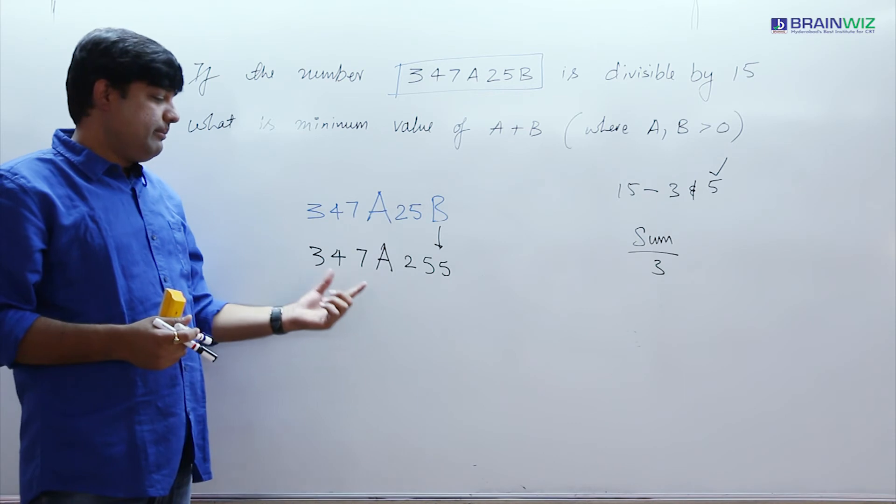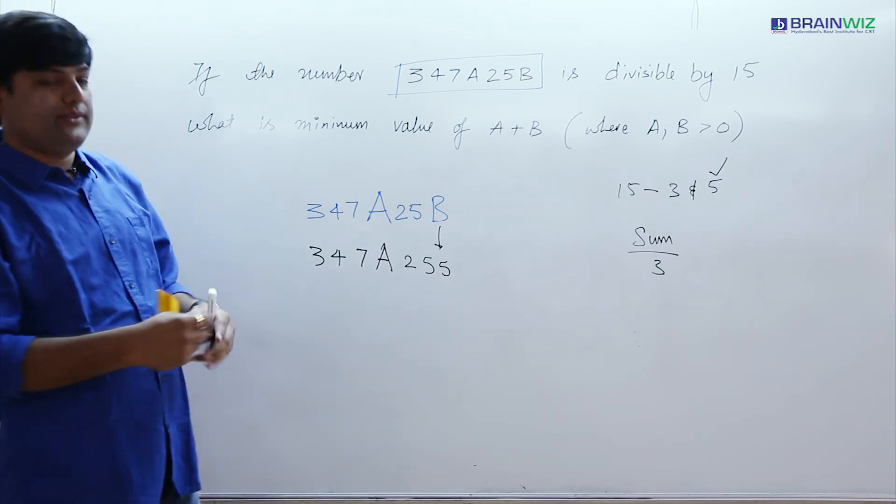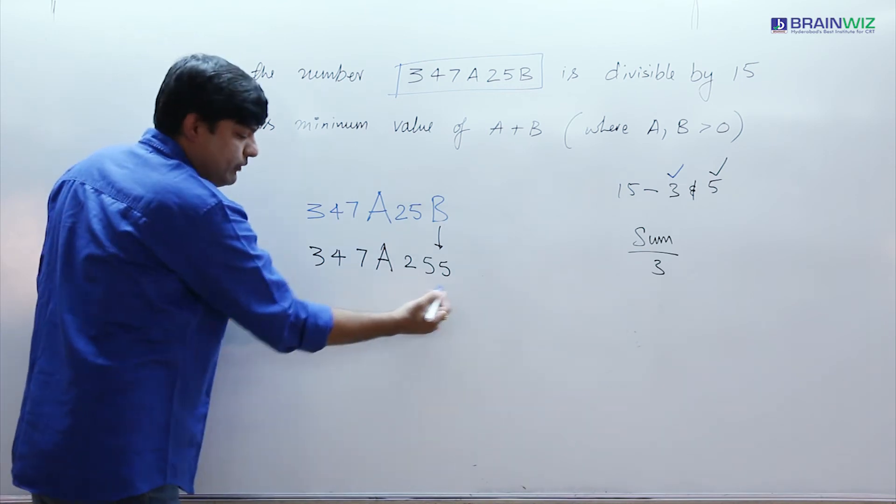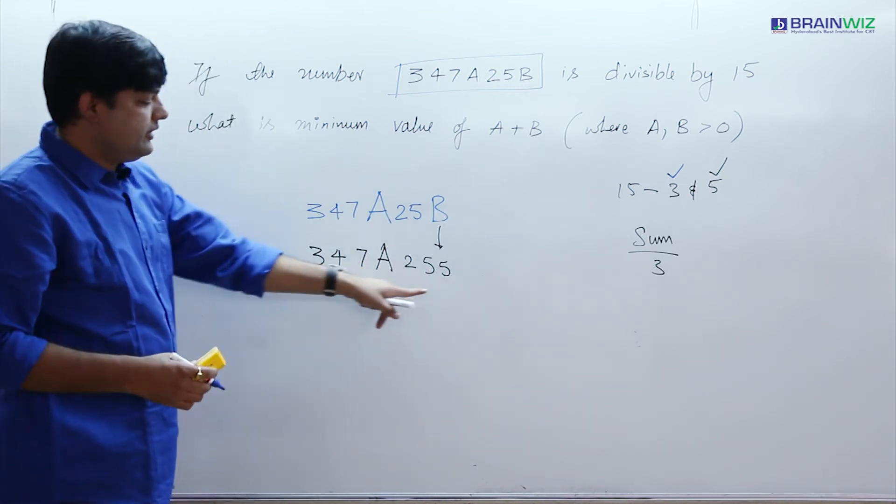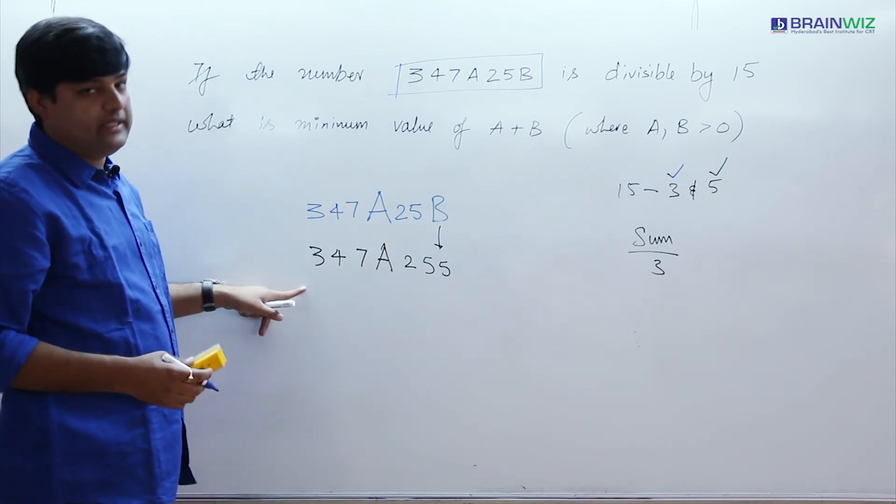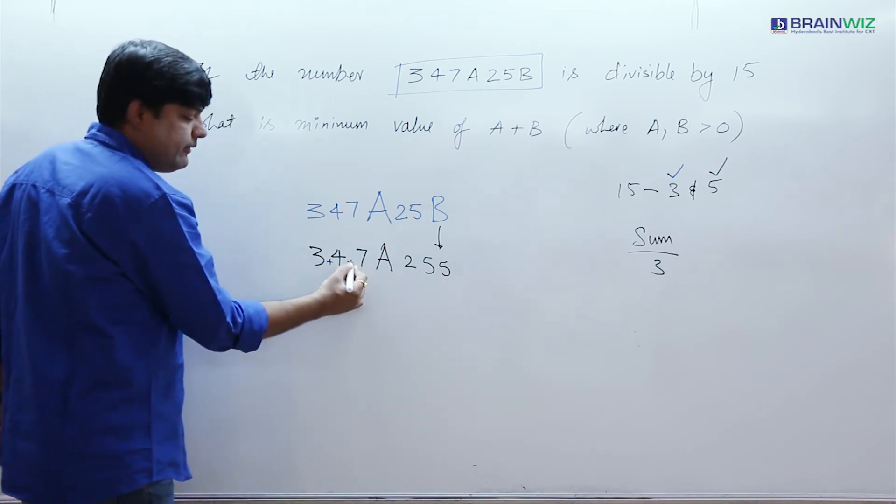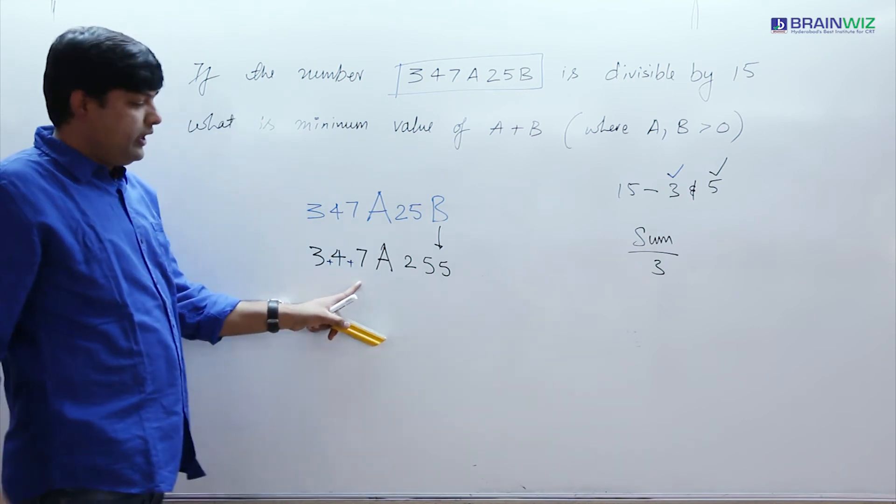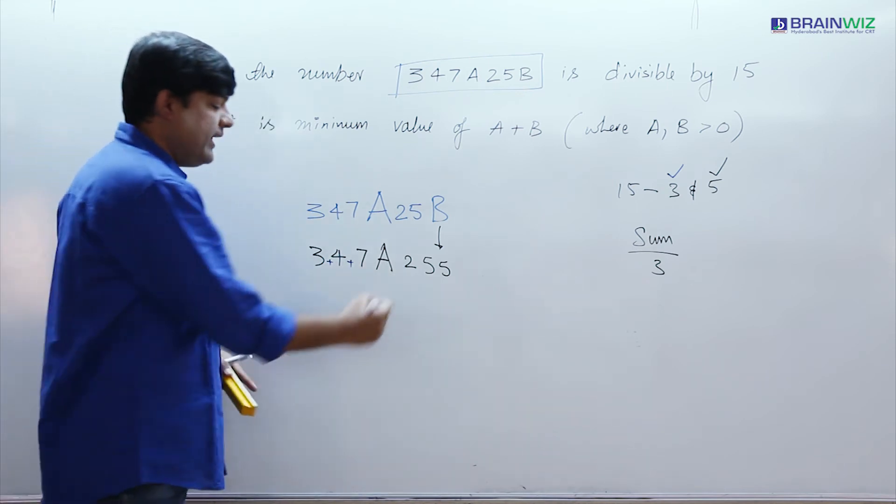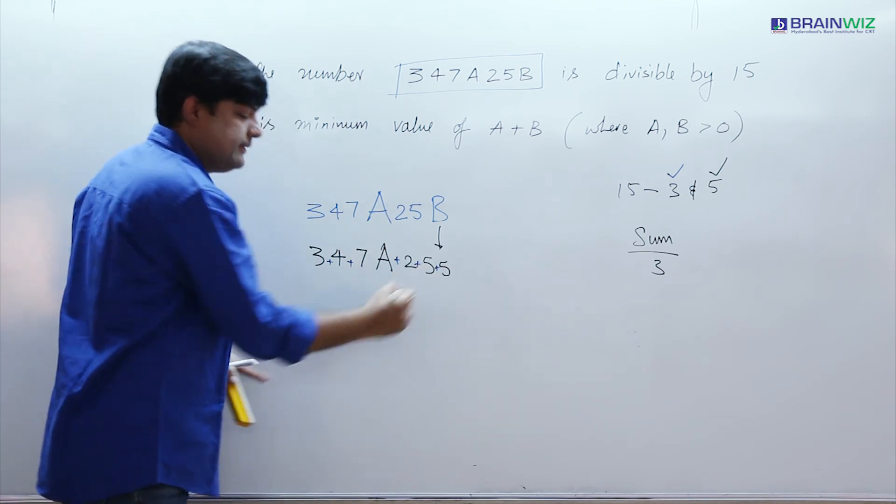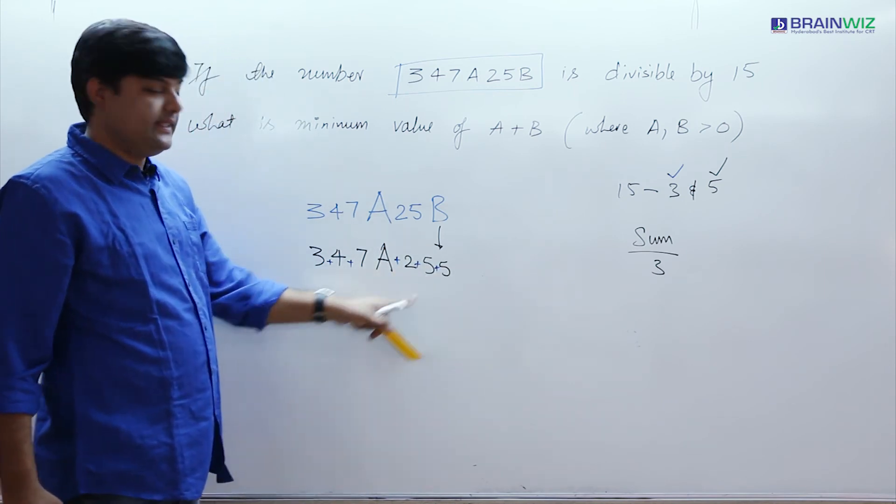Now this number has to be divisible by 3 as well. In order to be divisible by 3, we have to see the sum of the digits. The sum of the digits have to be divisible by 3. Then the number is definitely divisible by 3. Now let me check it out here. 3 plus 4, that is 7. 7 plus 7, that is 14. 14 plus 2, I hope you know that, is 16. 16 plus 10 which makes 26.